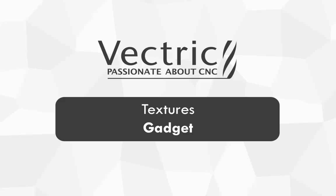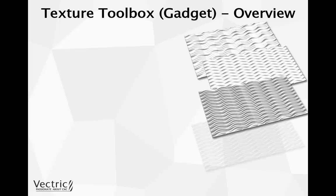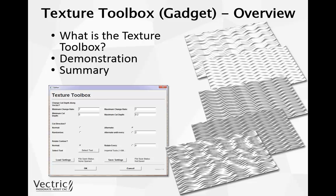In this presentation, we are going to take a look at the new gadget that has been created to add even more variety when creating textures. First, we're going to start with a quick overview of what we're going to be discussing today. The first thing we'll discuss is what exactly is the Texture Toolbox and how can it benefit me when creating textures. Then we're going to demonstrate the new gadget, and then give a quick summary. All the textures you can see on the right-hand side have all been created using the exact same wave vectors from the Vector Texture Tool, and all we do is simply change a few parameters within the Texture Toolbox to end up with a different variation of texture.